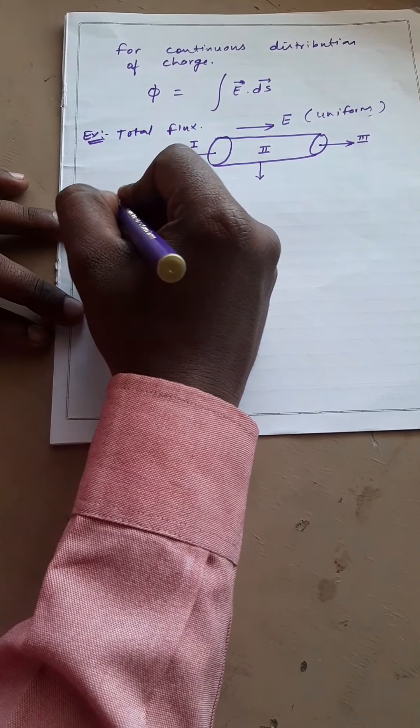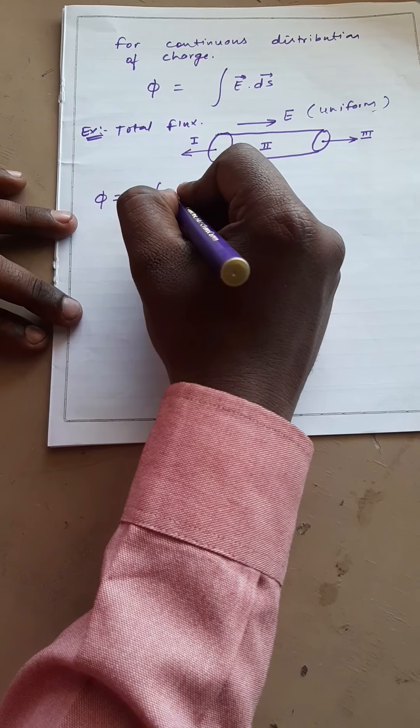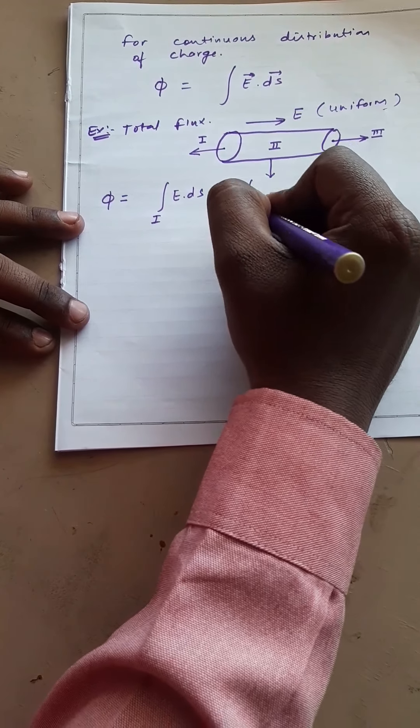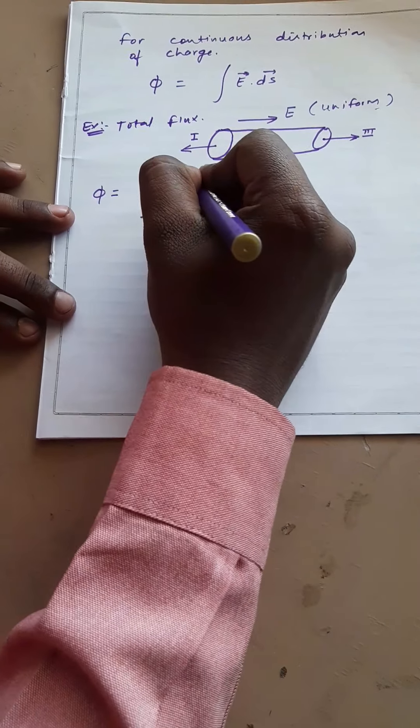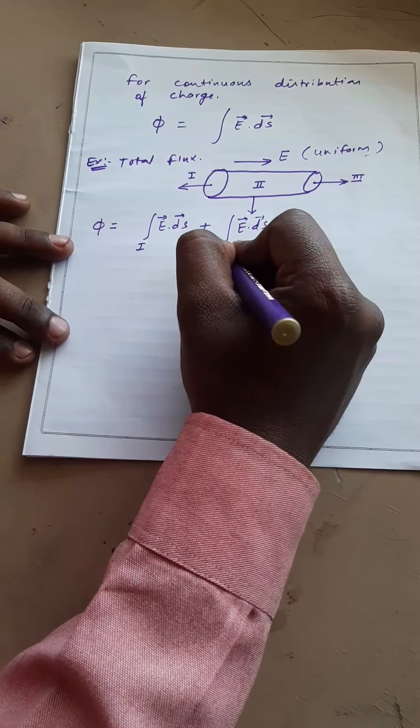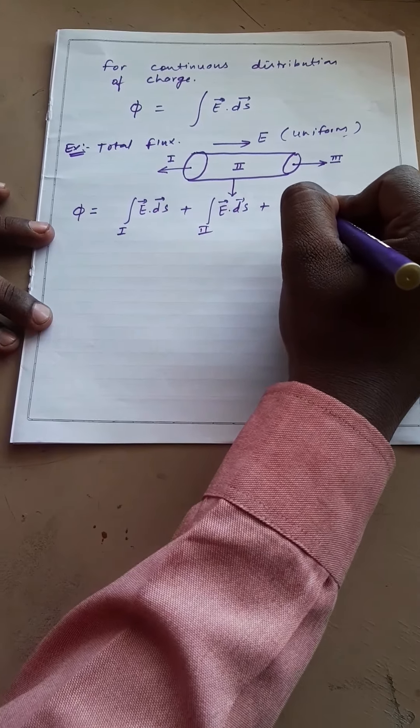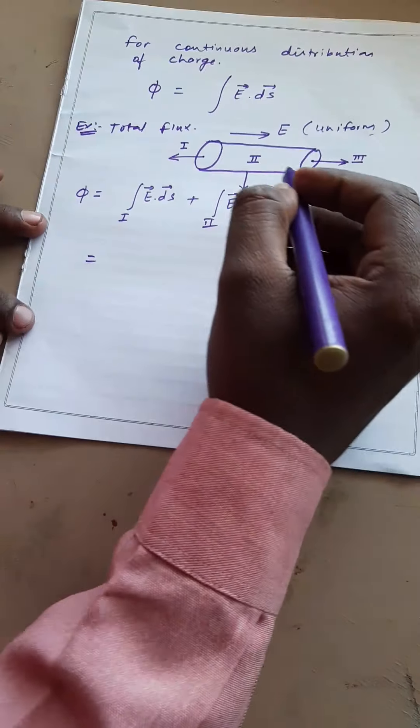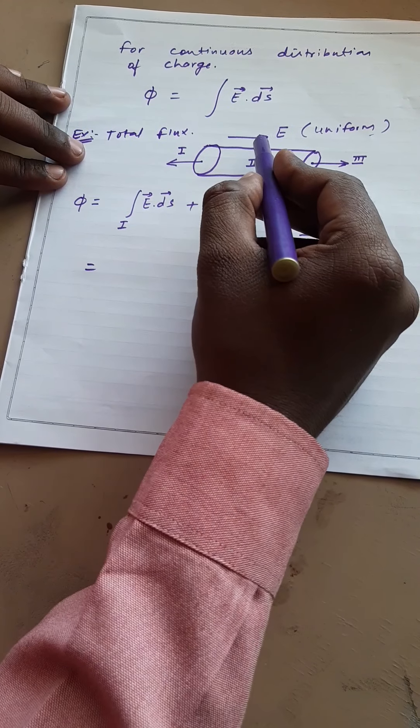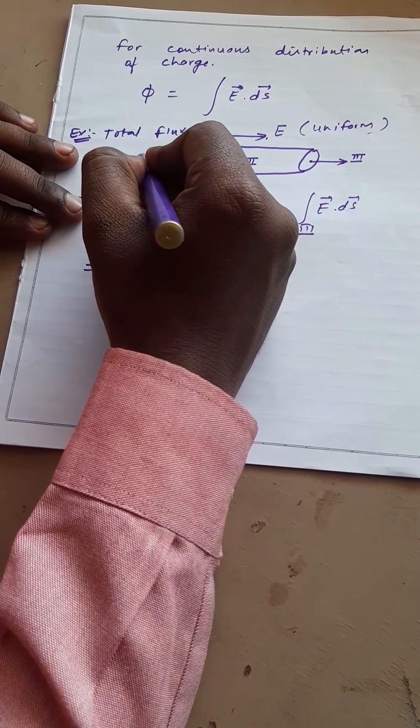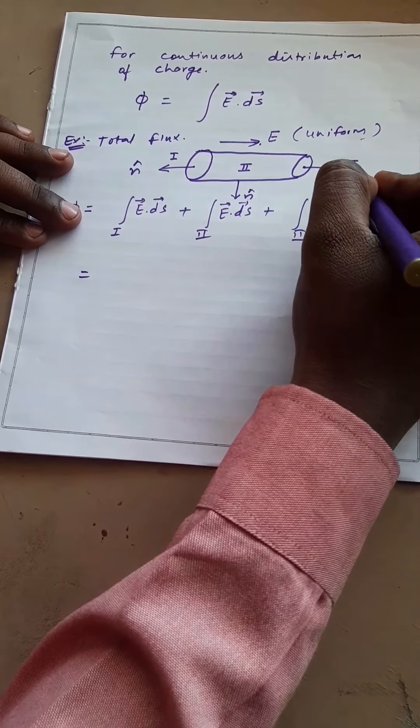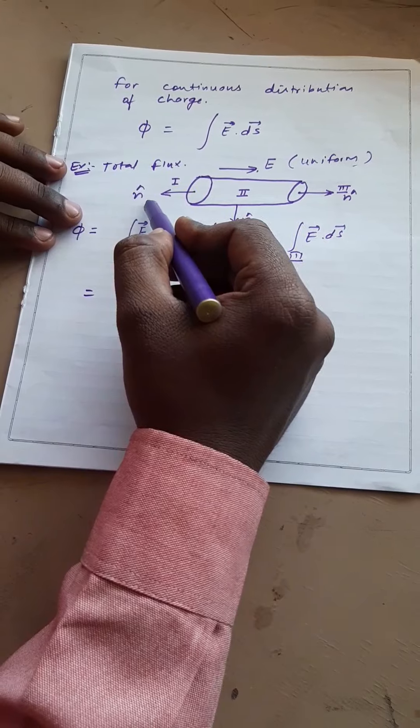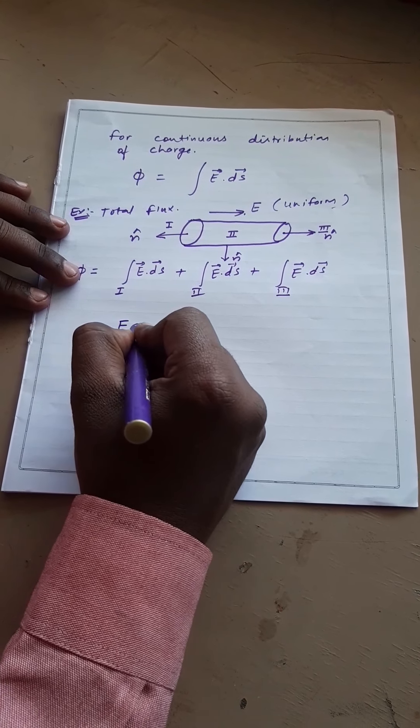the total flux φ will be equal to integration E dot ds due to first surface plus E dot ds due to second surface. As we can see that the direction of electric field and normal vector in the first case, electric field and area vector are at 180 degree. So here we can write E dot ds. Plus,